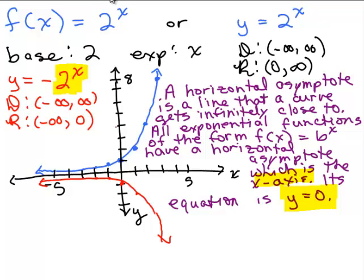What about if it were y equals 2 to the x minus 3? If instead of just y equals 2 to the x it was y equals 2 to the x minus 3, what would happen to all these y-coordinates? We know what 2 to the x is — we'd be subtracting 3 from all of them. So imagine every point on the blue curve is going to be 3 places lower. For example, this ordered pair (0, 1) is now going to be at (0, negative 2) — when you put in 0 for x you get 2 to the 0, which is 1, minus 3 is negative 2. So that changes your asymptote.